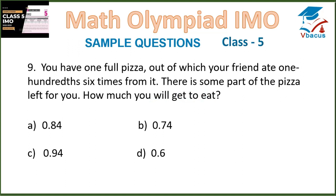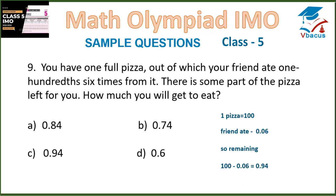Question 9: You have 1 full pizza, out of which your friend ate 0.06 parts. There is some part of the pizza left for you. How much will you get to eat? 1 pizza is equal to 100 parts, and the friend ate 0.06 part, meaning 0.01 times 6 is equal to 0.06. So, the leftover pizza is 1 minus 0.06, that is 0.94, which is in option C.